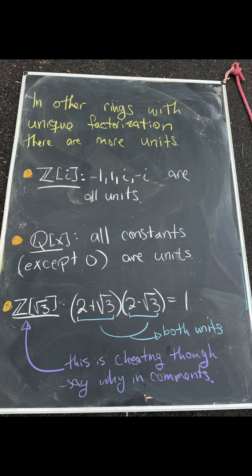For instance, in the Gaussian integers, which is really just like a complex version of the integers, we have four units: negative 1, 1, i, and negative i.